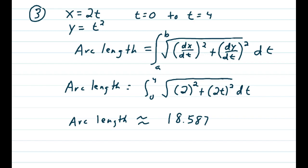dx/dt is just 2, so we're going to square that, plus dy/dt squared, which is 2t from your t squared.